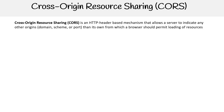What is CORS? It is an HTTP header-based mechanism that allows a server to indicate any other origins — such as domain, scheme, or port — from which a browser should permit loading of resources.